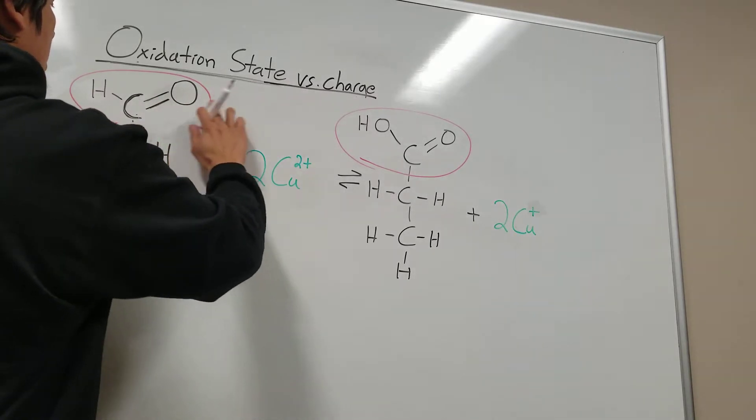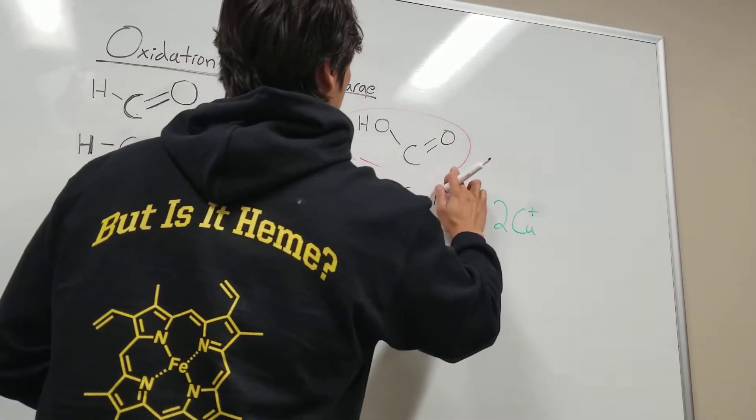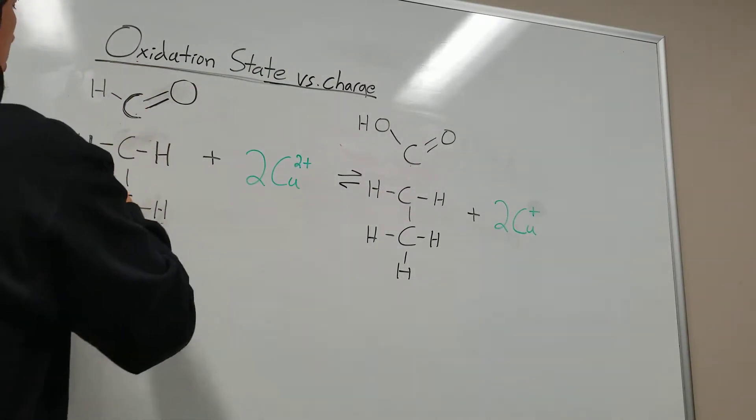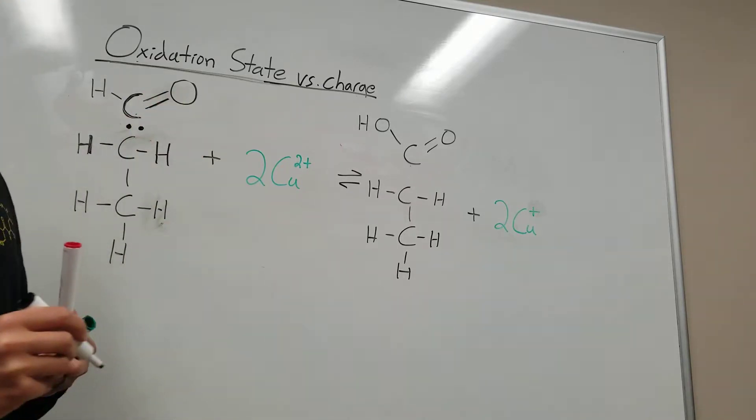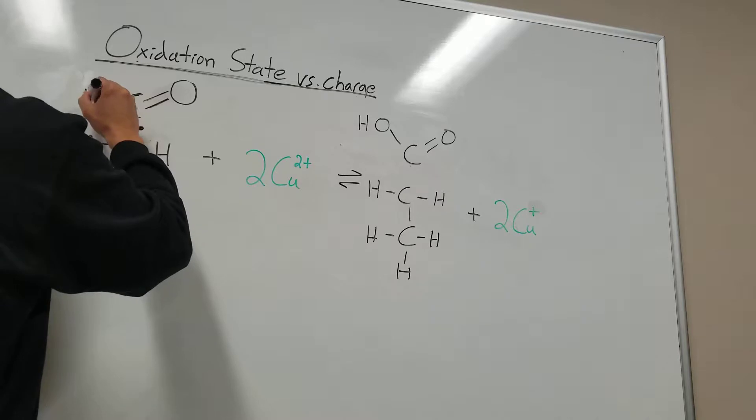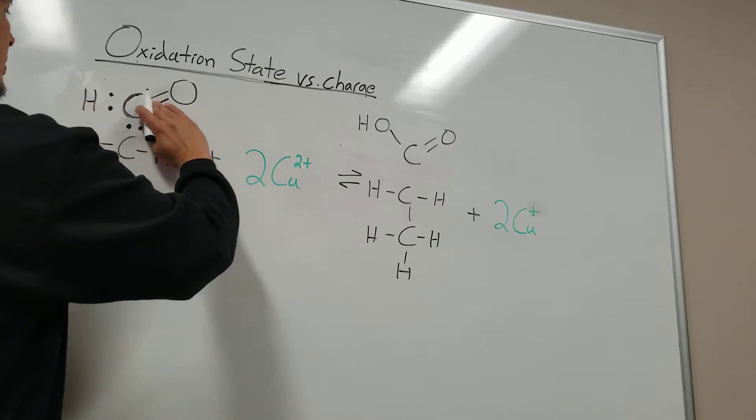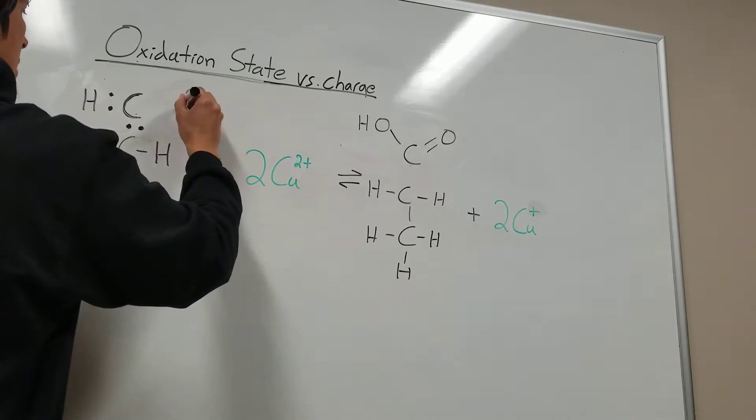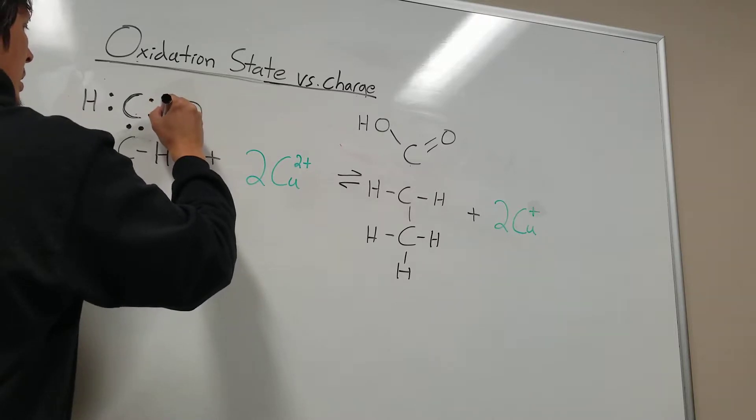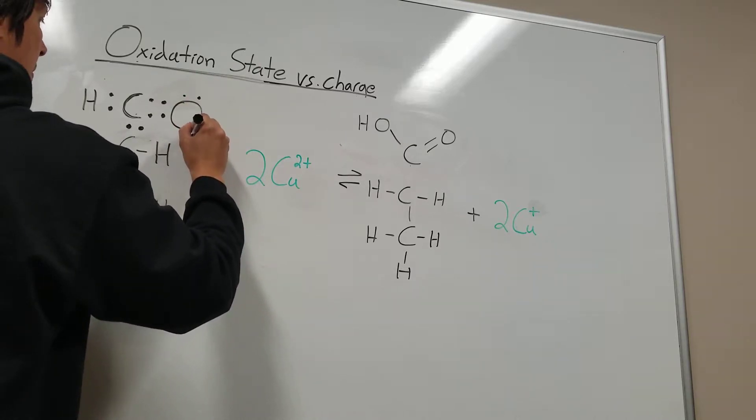The way we do this is we're going to convert this into a Lewis dot structure. There's one bond between these two carbons, so we're putting two electrons as dots right here between the two carbons. I'm going to redraw the hydrogen, so there's a single bond—the two electrons between this carbon and this hydrogen. I'm going to redraw the oxygen. That was a double bond, so we have one, two, three, four electrons. And then there are two lone pairs on the oxygen.